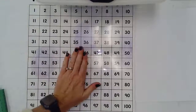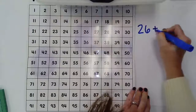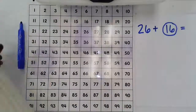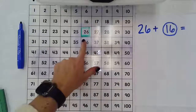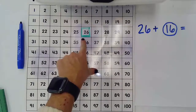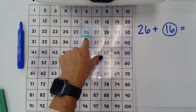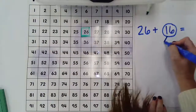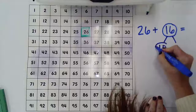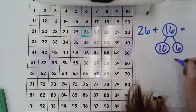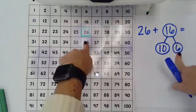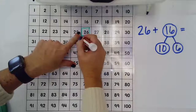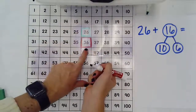So today we're going to use a hundreds chart to help us find 26 plus 16. On my hundreds chart I have found 26, and I started with 26 because it's the largest number in my equation. I'm going to break apart 16 into friendly numbers — 10 and 6 — to help me. So if I start with 26 and I add 10, I'm just going to move down a row to find 36.